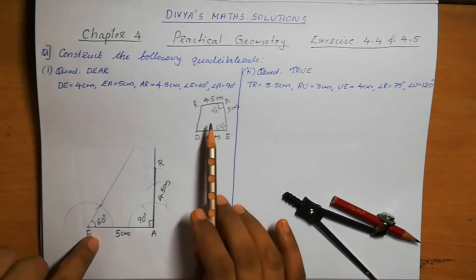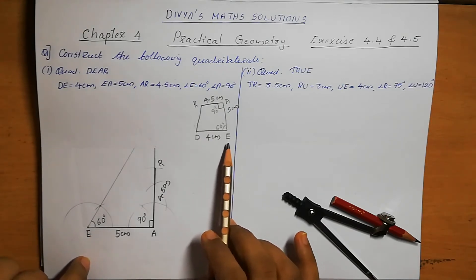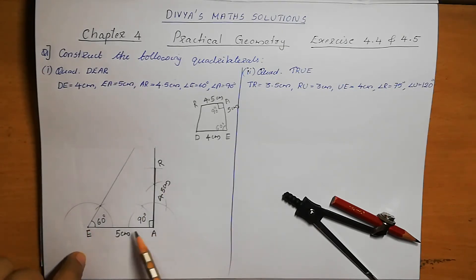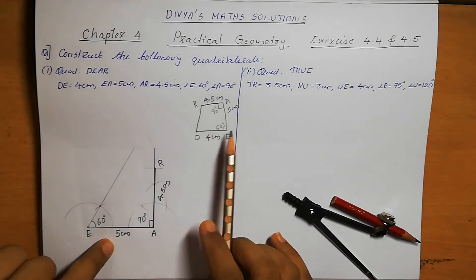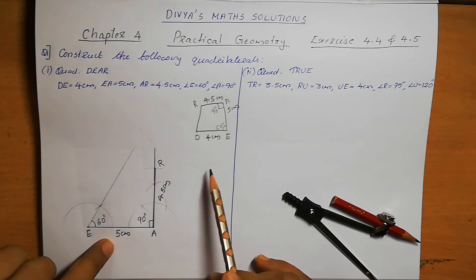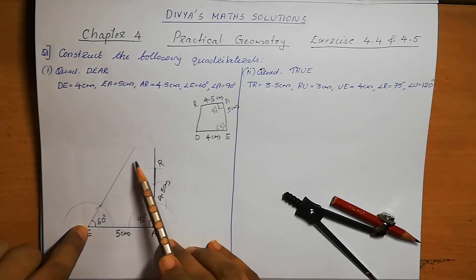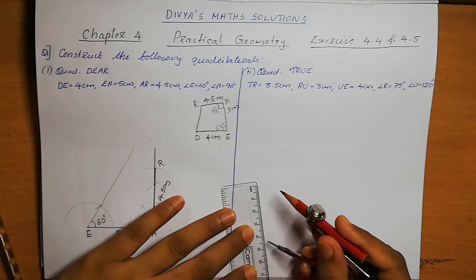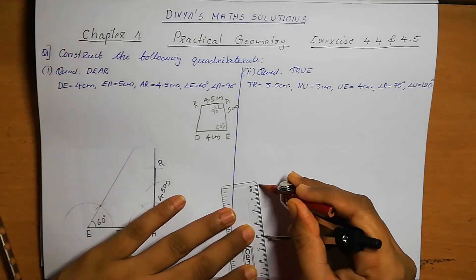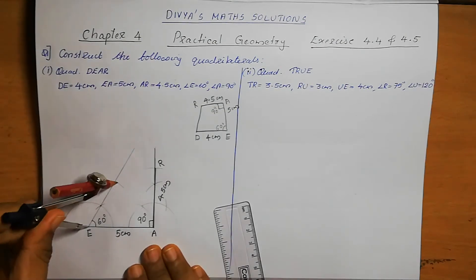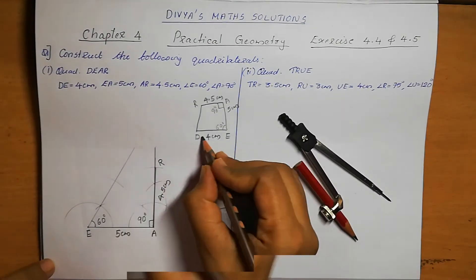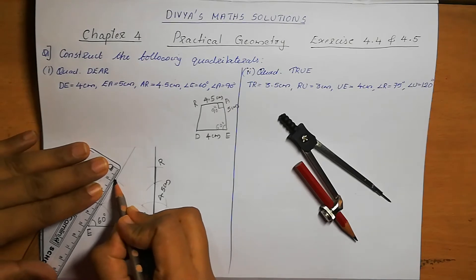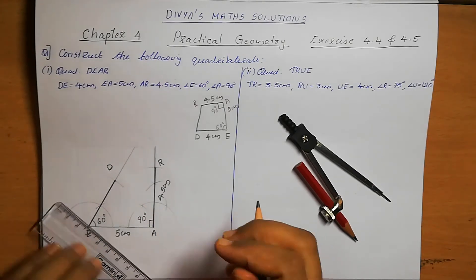Now we have point R. The missing point is D. E to D is how much? 4 cm. So take 4 cm and from E, cut that arc on the 60-degree line. This cutting point is D. D to E distance is 4 cm. We can mark this point as D.